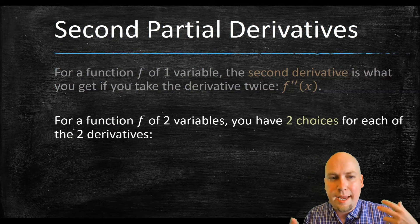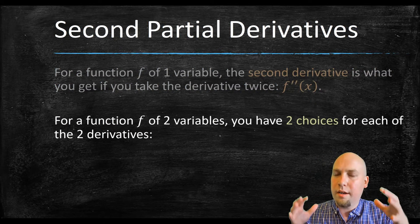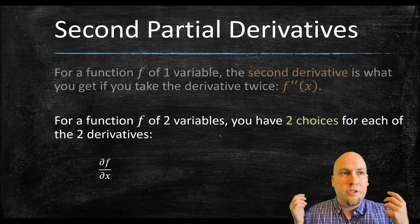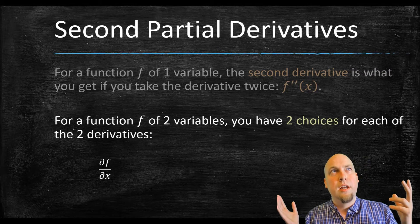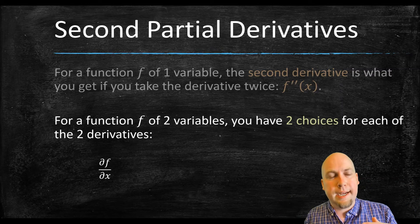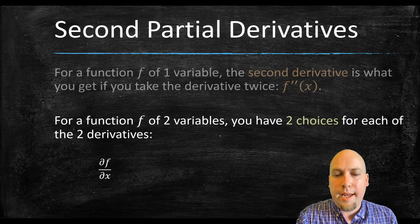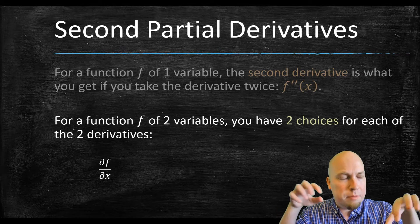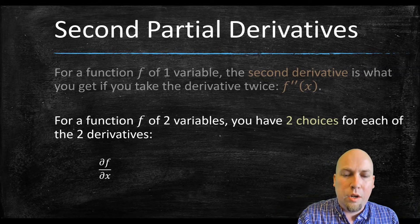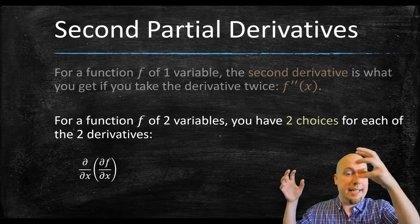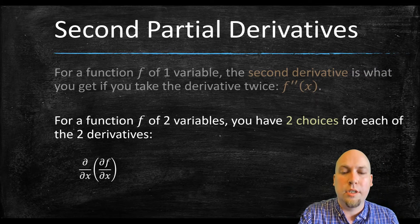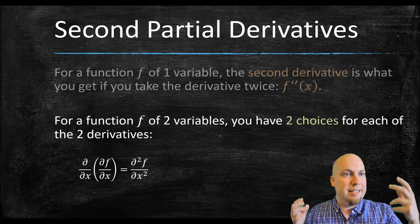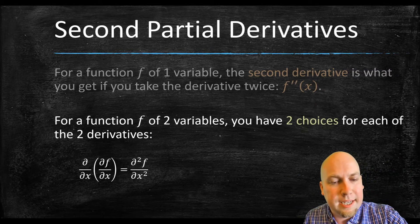The same idea applies to multivariable functions. You start with a function of two variables, and when you take the derivative the first time you have two choices. If we take the derivative with respect to x — constructing the x partial derivative — then again we have two choices. We could take the x partial derivative of the x partial, giving us what we call the double x partial, or the second derivative with respect to x. The notation uses del squared on top, with x squared on the bottom, meaning you took the derivative with respect to x twice.